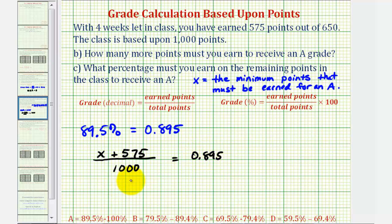And now if we solve this equation for x, we'll know the minimum number of points that we must earn to receive an A. So let's first clear this fraction by multiplying both sides of the equation by 1,000. So on the left side, this simplifies to 1. So we just have x plus 575. On the right side, multiplying by 1,000, we can just move the decimal point to the right three places. That would be 895.